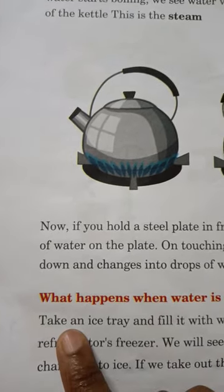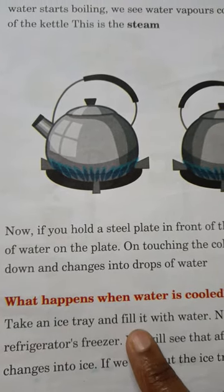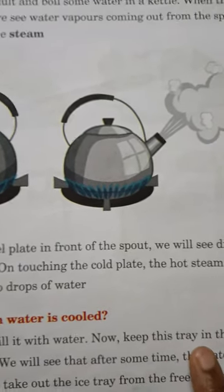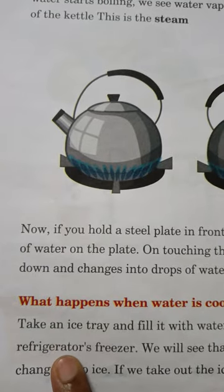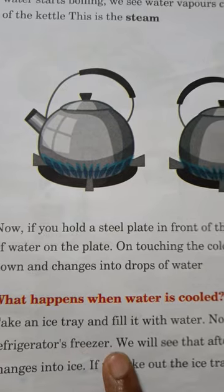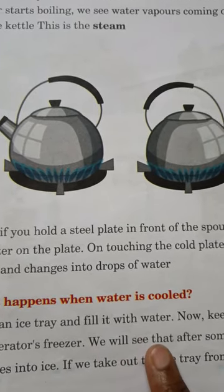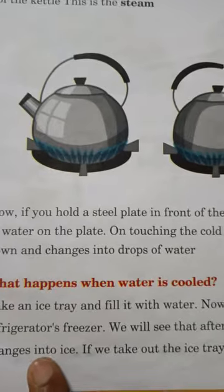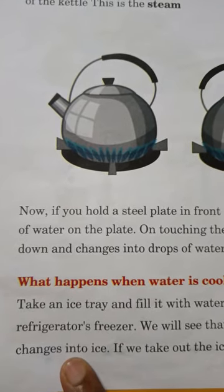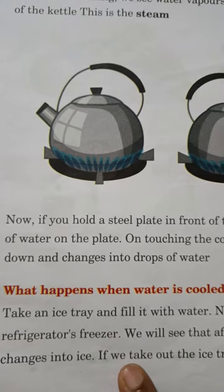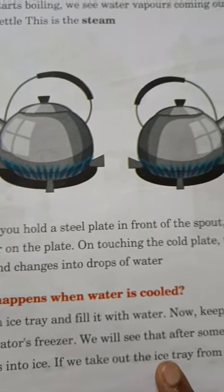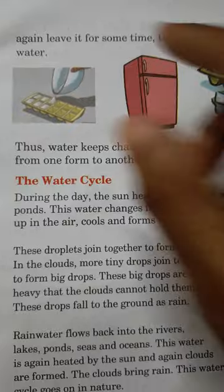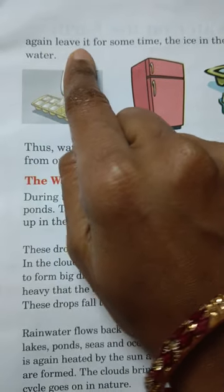What happens when water is cooled? Take an ice tray and fill it with water. Now keep this tray in the refrigerator's freezer. We will see that after some time, the water changes into ice.